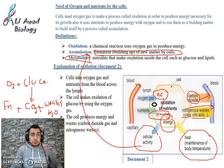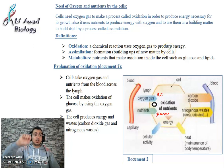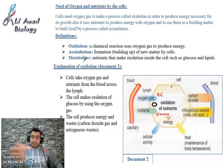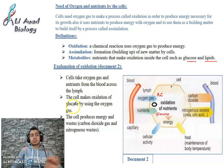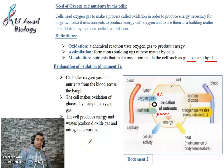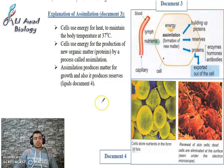To summarize the key definitions: Oxidation is a chemical reaction that uses oxygen gas to produce energy in the presence of glucose. Assimilation is the process of building up new matter. Metabolites are the nutrients that undergo oxidation — such as glucose, lipids, fatty acids, glycerol, and sometimes amino acids. Cells take oxygen gas and nutrients from blood across the lymph, perform oxidation of glucose with oxygen, and produce energy, carbon dioxide, water, and nitrogenous wastes. In the next video, we will talk about assimilation in detail. See you then.